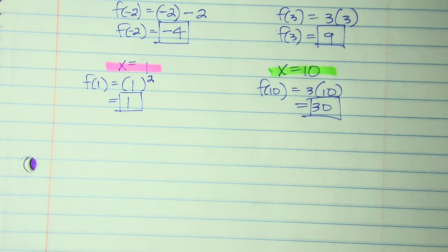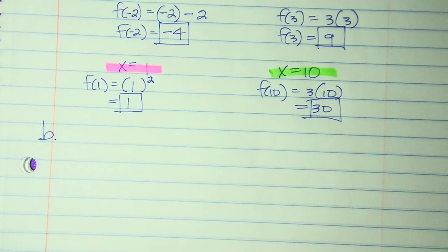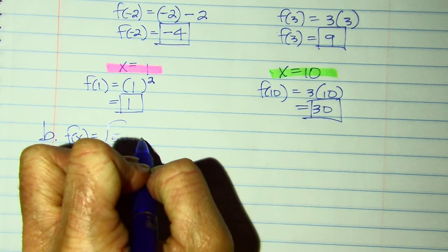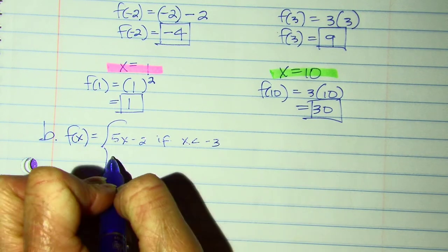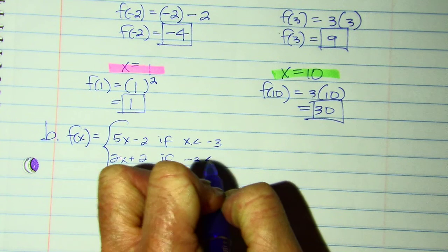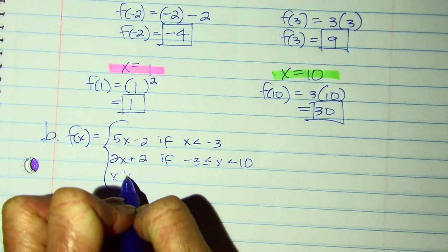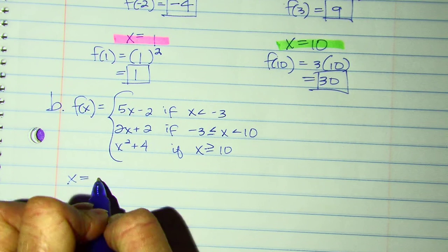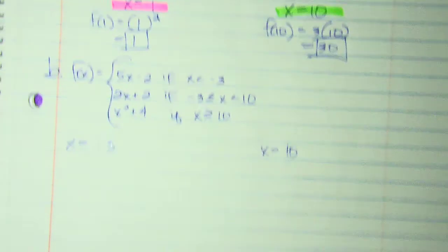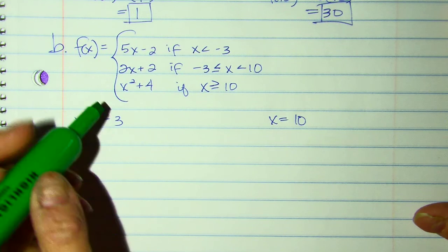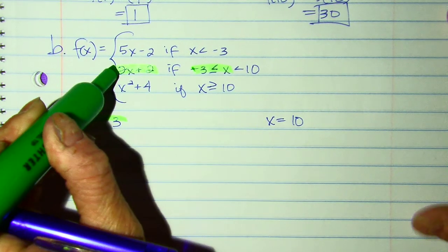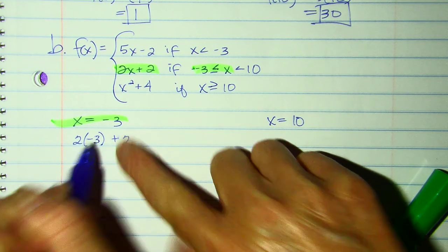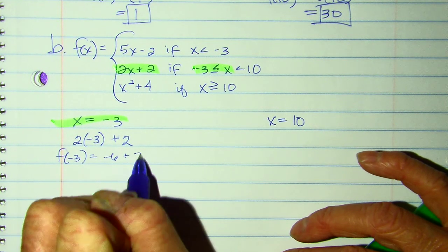Part B in our lesson practice: F of X equals 5X minus 2 if X < negative 3; equals 2X plus 2 if X is between negative 3 and 10; and equals X squared plus 4 if X ≥ 10. Evaluate at X = negative 3 and X = 10. For X = negative 3, that's equal to negative 3, so I use 2X plus 2: F of negative 3 equals negative 6 plus 2, which is negative 4.